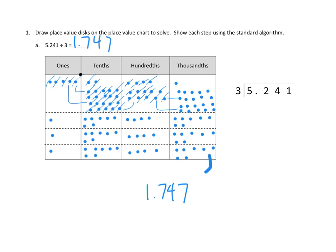We look at our biggest units first: there are five ones. Could we divide those into three equal groups? Sure. We could take three of them — one in each group. That means each group will have exactly one. We've used one times three, or three ones. We subtract, because we've used them up. That leaves us with two ones remaining.